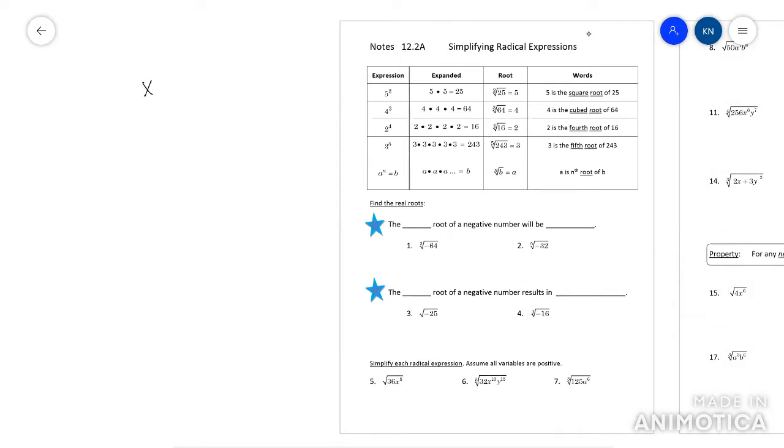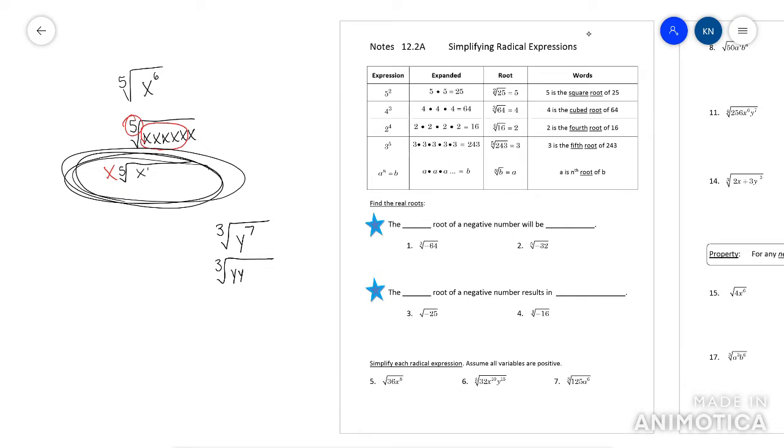Imagine you saw something like the fifth root of x to the sixth power. What you need to realize is there's six x's in there. This five tells you you need five of them in order to make an x outside of that root. And then there's just one left over. This is going to be very important to understand. Like, if it was the cube root of y to the seven, there's seven y's in there. In order to make a y outside, you need three. So here's one y outside, here's another y outside. So now it's y squared outside. And then left over in that cube root is just one y. So you're definitely going to need to know that.